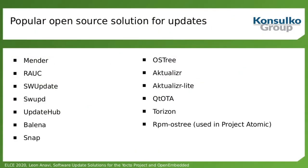Here is a list of popular open source solutions for software updates: Mender, RAUC, SWUpdate, SWUpd, UpdateHub, Balena, Snap (container-based), OSTree (from the desktop world but now a core technology for embedded Linux updates), Aktualizr, Aktualizr Lite, Qt OTA, Torizon from Toradex, and RPM-OSTree used in Project Atomic. All these options have different strategies for performing updates — some similar, some completely different.